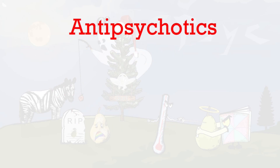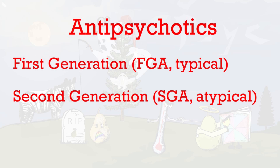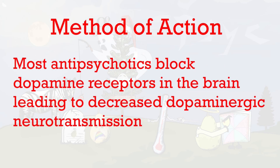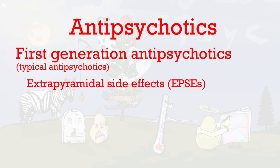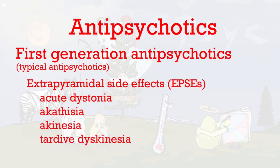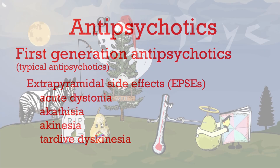Antipsychotics are split into first and second generation classes. Although there are a couple of exceptions, most antipsychotics block dopamine receptors in the brain, leading to decreased dopaminergic neurotransmission. First-generation antipsychotics have a tendency to cause more extrapyramidal side effects (EPSEs) than second-generation antipsychotics. EPSEs include acute dystonia, akathisia, akinesia, and tardive dyskinesia.